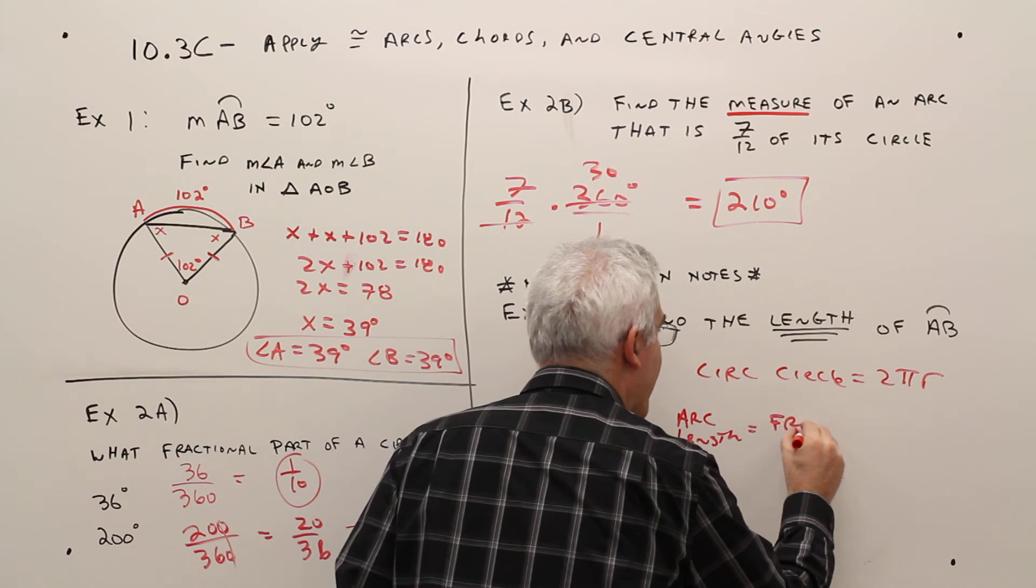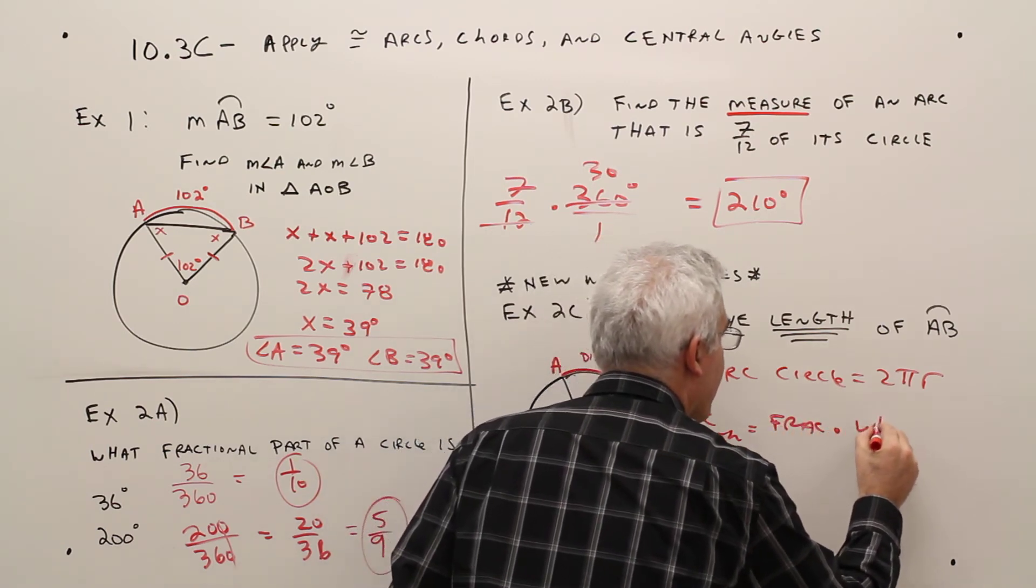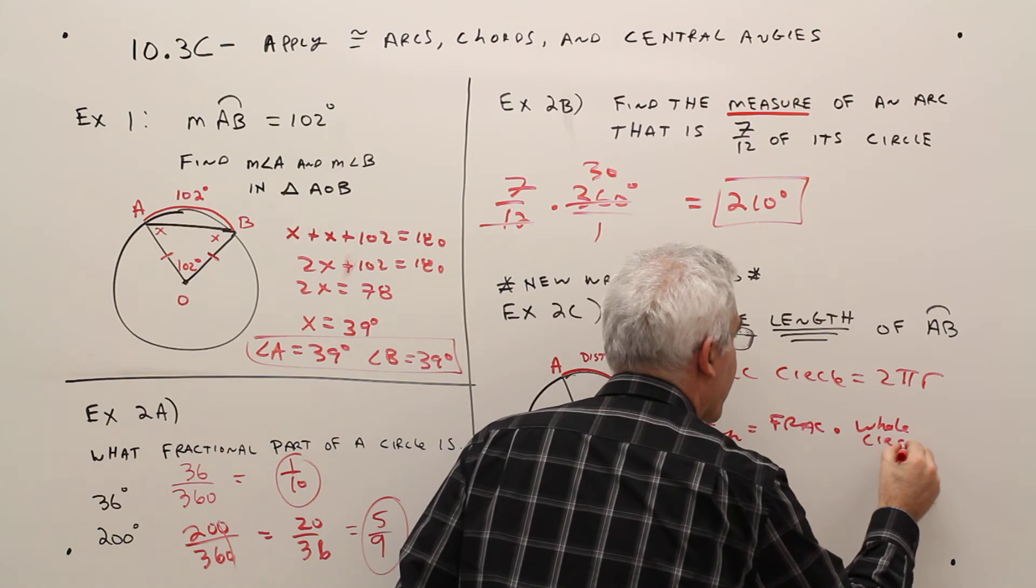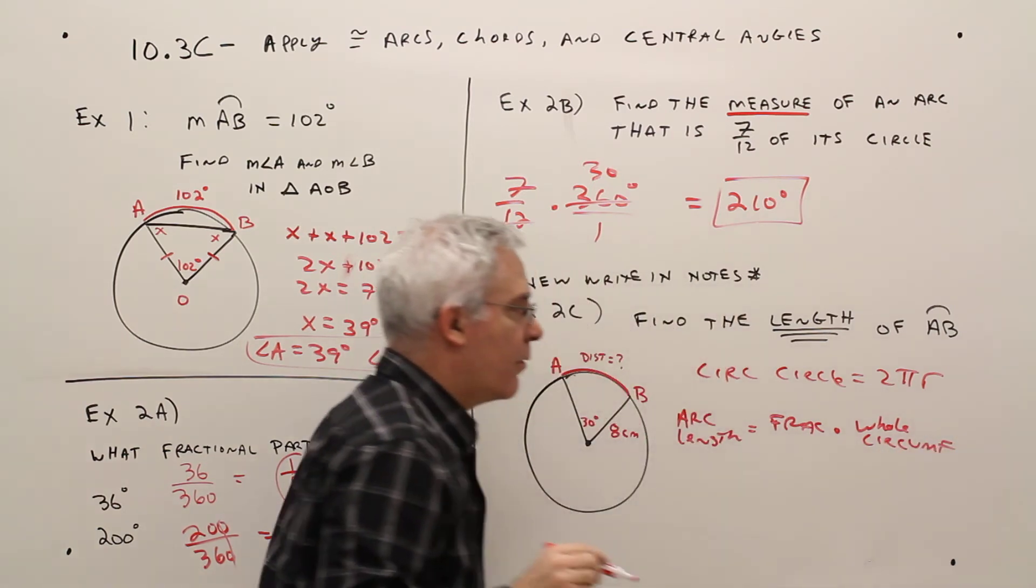And then this length is just going to be a fraction of that whole circumference. So the arc length will equal the fraction times the whole circumference.